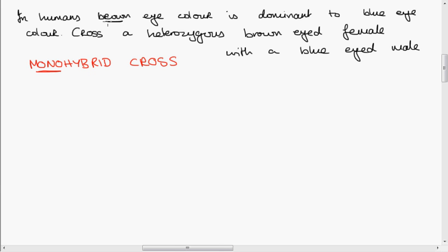Okay, so we have brown and we have blue. Now first of all, we need to figure out which of these is dominant and the question is telling us. So brown eyes are dominant over blue eyes. Therefore, we're going to give brown a capital B.